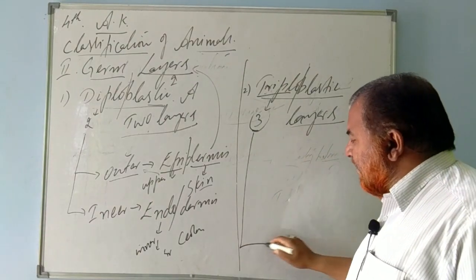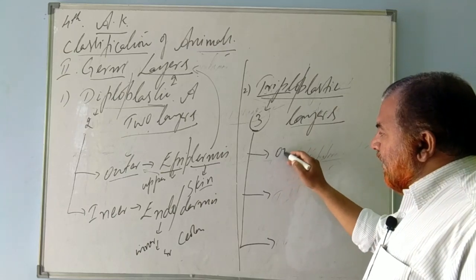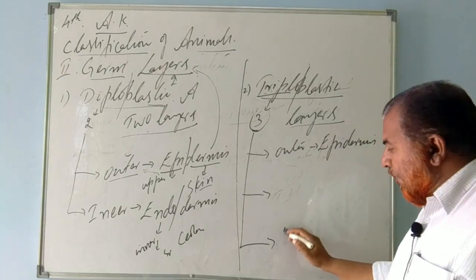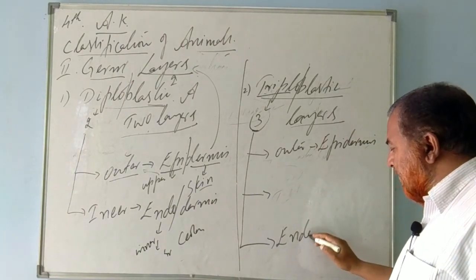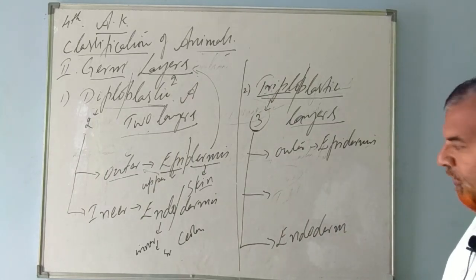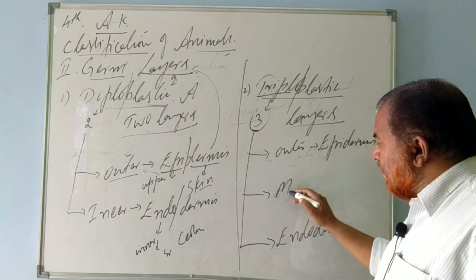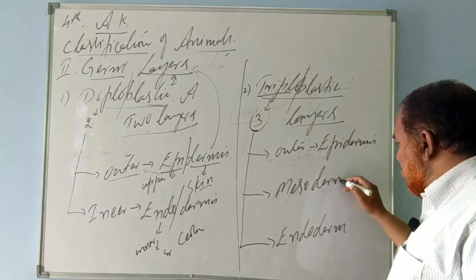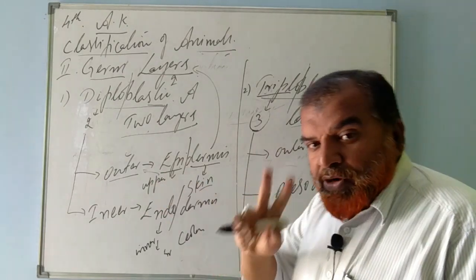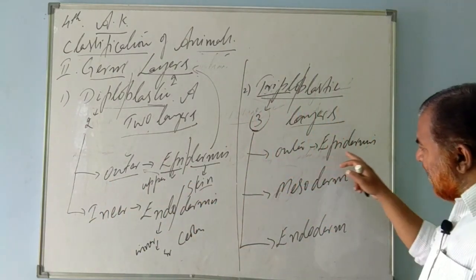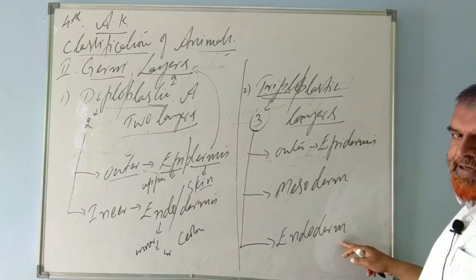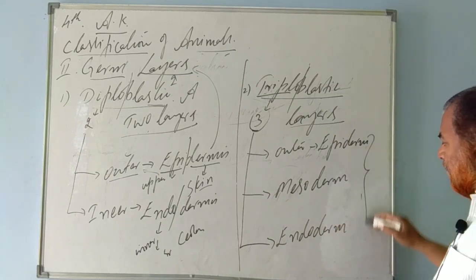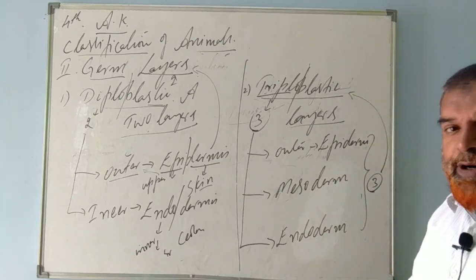Triploblastic animals are made up of three layers. The outer layer is epidermis, the inner layer is endodermis, and the middle layer is mesodermis or mesoderm — 'meso' refers to middle. In diploblastic animals the mesoderm is absent; only epidermis and endodermis are present. In triploblastic animals all three layers are present: epidermis, mesoderm, and endoderm. Hence these animals are called triploblastic animals.